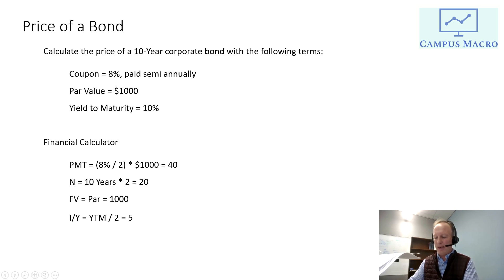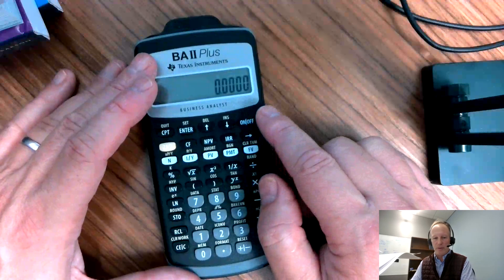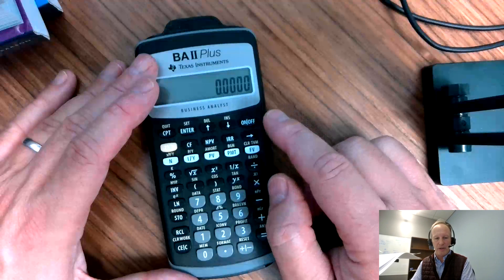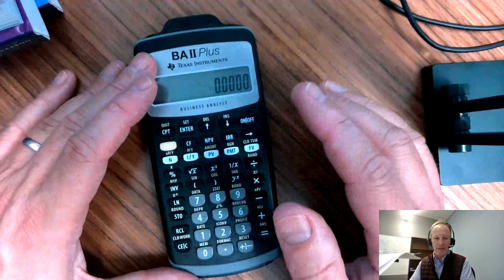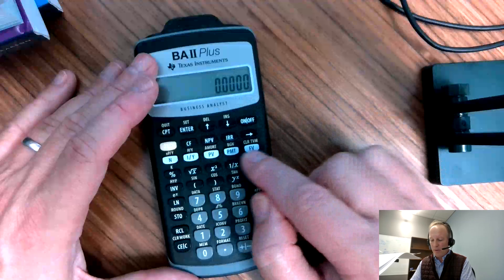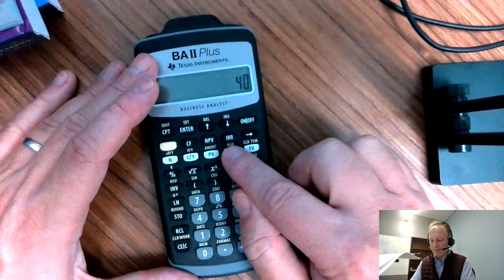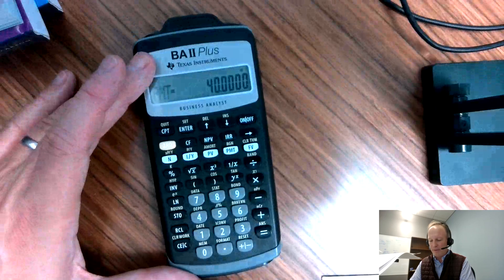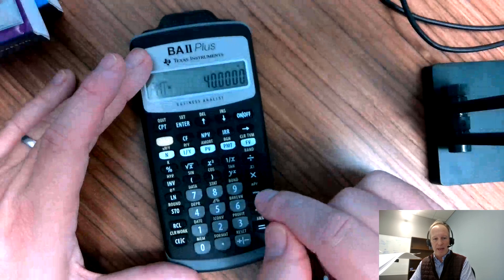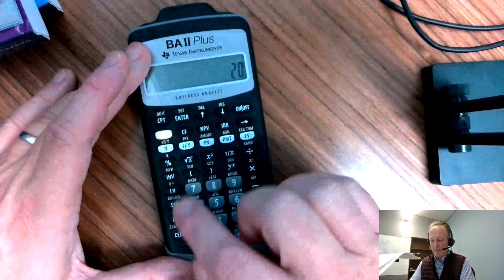So let's go ahead and do all this now, and we'll just do it in the same order as I showed, but you can actually do these in any order. So the payment, let's do that first. 40 PMT. So you'll see payment is 40. The N is 20, so I'm going to hit 20 N.